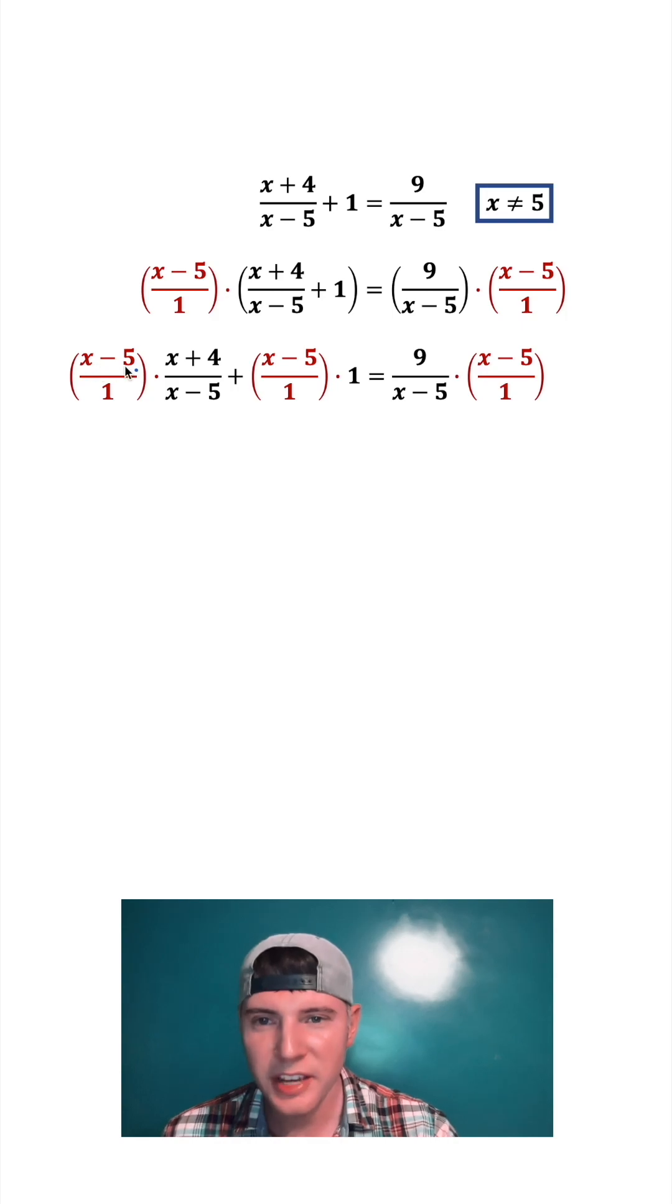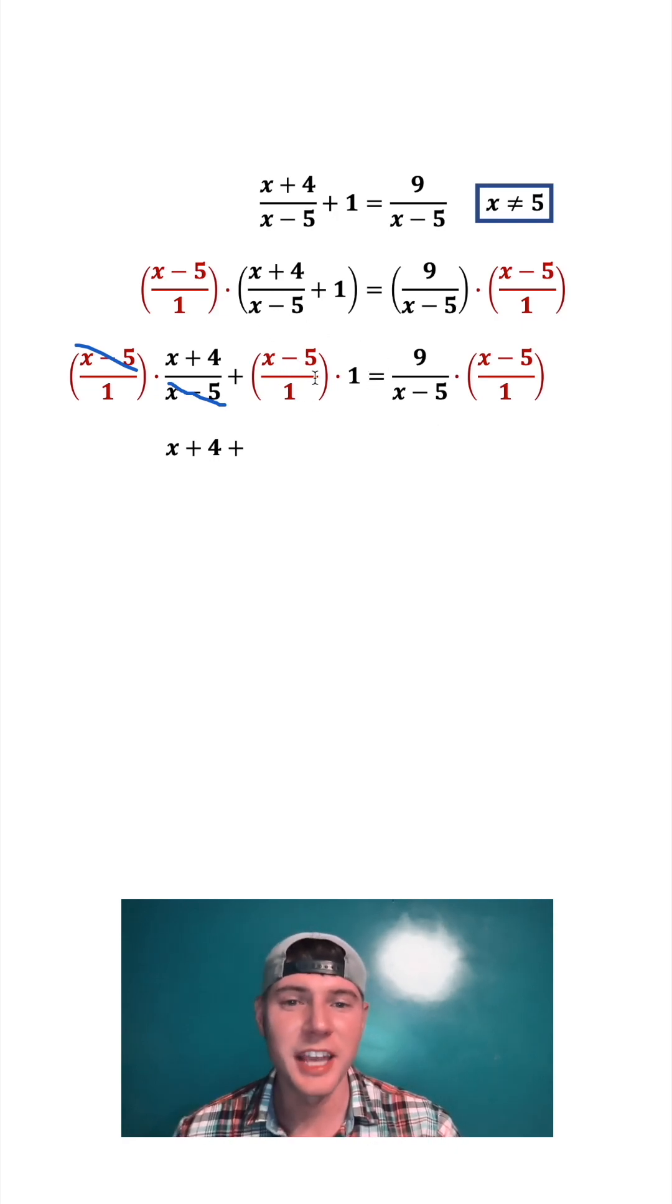For the first term, x minus 5 cancels with x minus 5, giving us x plus 4. For the second term, there's nothing to cancel with x minus 5, so it ends up being x times 1 minus 5 times 1, which is x minus 5. On the right hand side, x minus 5 on top cancels with x minus 5 on bottom, leaving us with just 9.